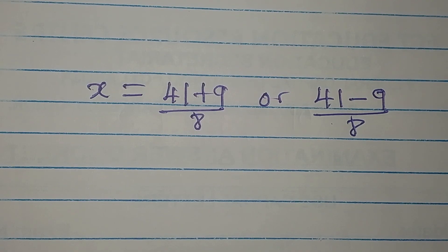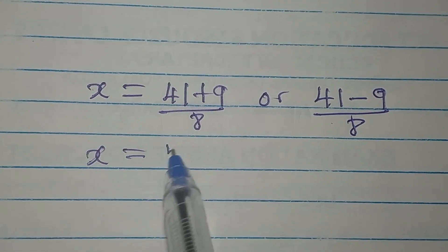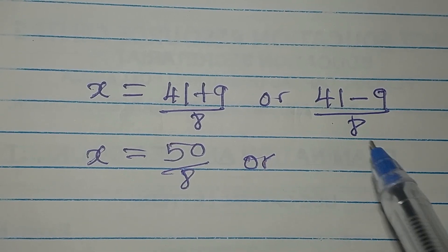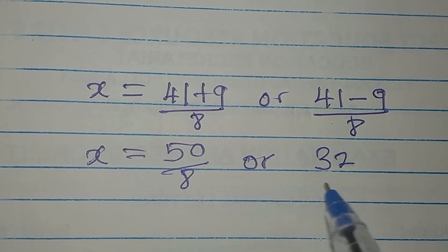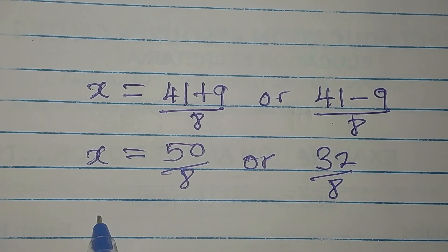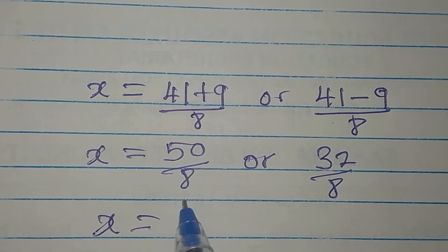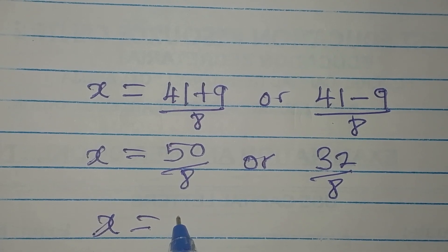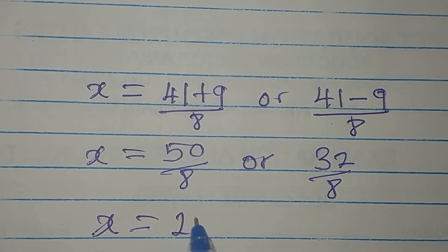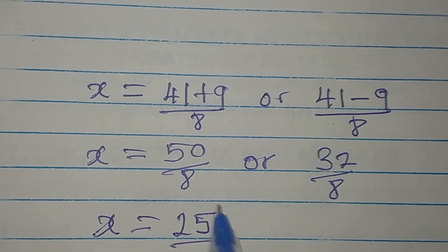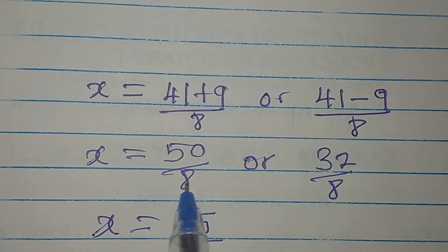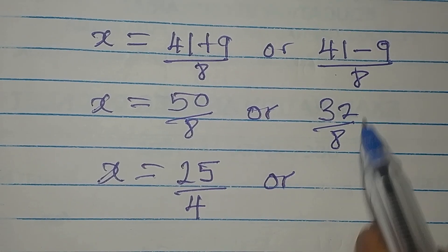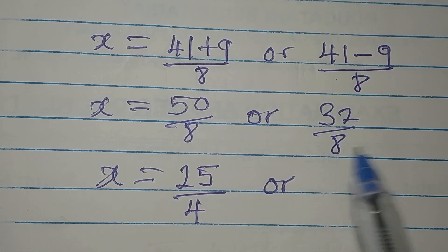So x equals 50 over 8 or 32 over 8. Let's simplify: 50 divided by 8 — dividing both by 2 — gives 25 over 4. And 32 divided by 8 gives 4. So x equals 25/4 or x equals 4.